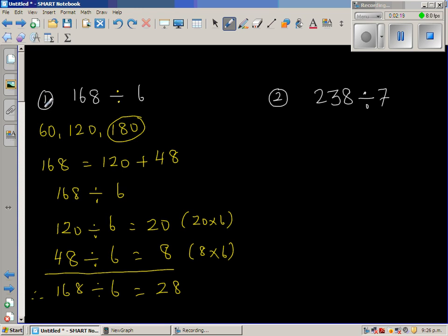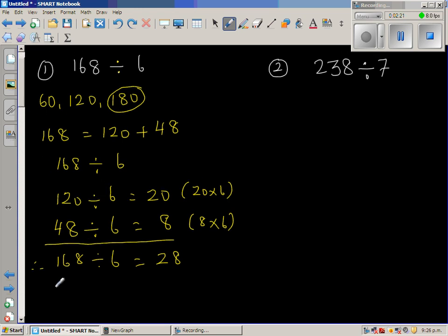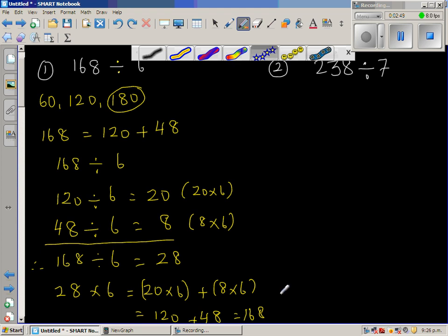And if you want to check, you can check. How can I check? 28 times 6. 28 times 6 should give you 168. This is same as 20 times 6, we are doing the opposite, plus 8 times 6, which is 120 plus 48, which is 168. So your answer is absolutely right. You can give yourself a star.